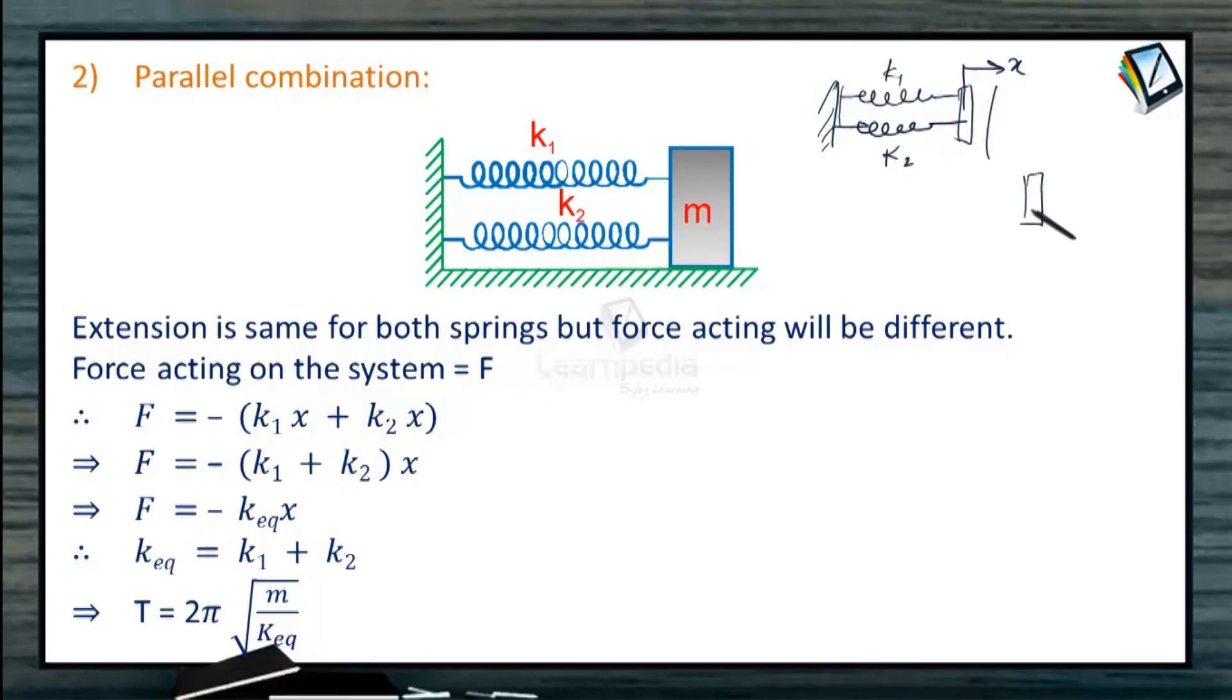So force applied on this body by these two springs will be K1X and K2X. Suppose we have a single spring where this object is connected and when it is moved by the distance X, then suppose K is the spring constant, then KX will be the force applied by the spring on this block. So for equivalent result, KX must be same as K1X plus K2X.